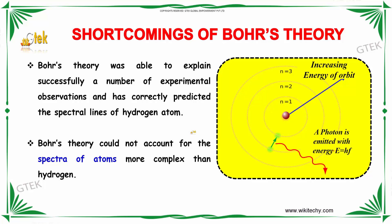We will talk about the shortcomings of Bohr's theory. Bohr's theory was able to explain successfully a number of experimental observations and has correctly predicted the spectral lines of the hydrogen atom. However, Bohr's theory could not account for the spectra of atoms more complex than hydrogen. That is a major drawback of Bohr's theory.